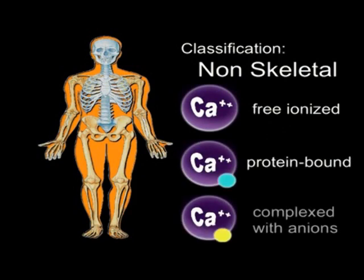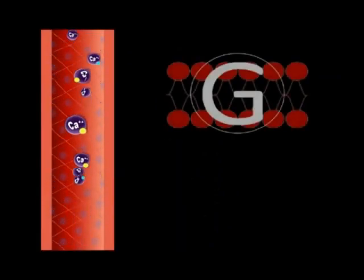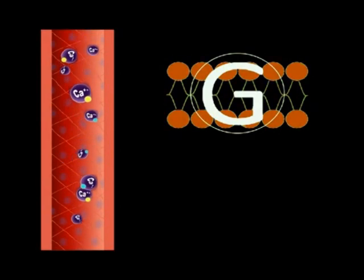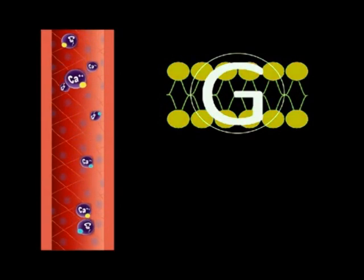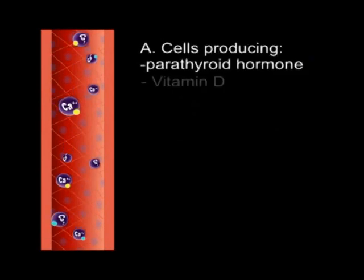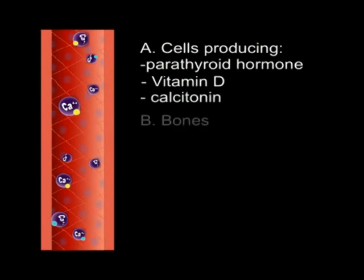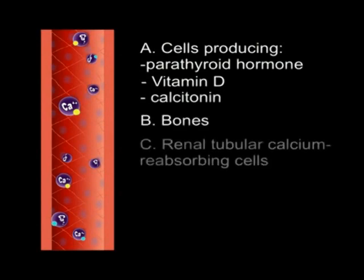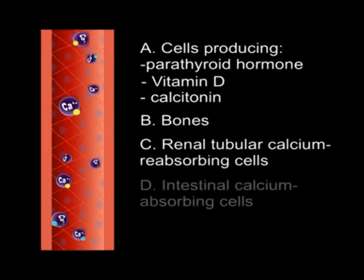There are several factors that regulate calcium in the body. They are mediated by a calcium-sensing plasma membrane receptor of G-protein linked type and are located in cells producing parathyroid hormone, vitamin D, calcitonin, bones, renal tubular calcium reabsorbing cells, and intestinal calcium absorbing cells.